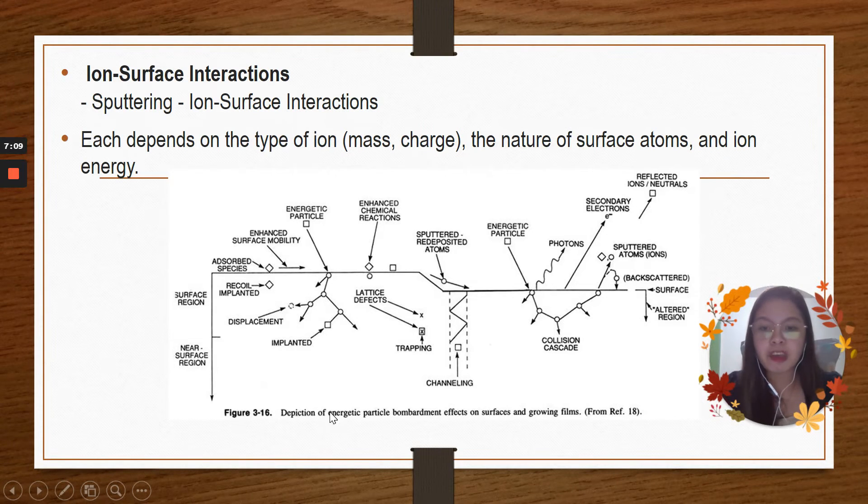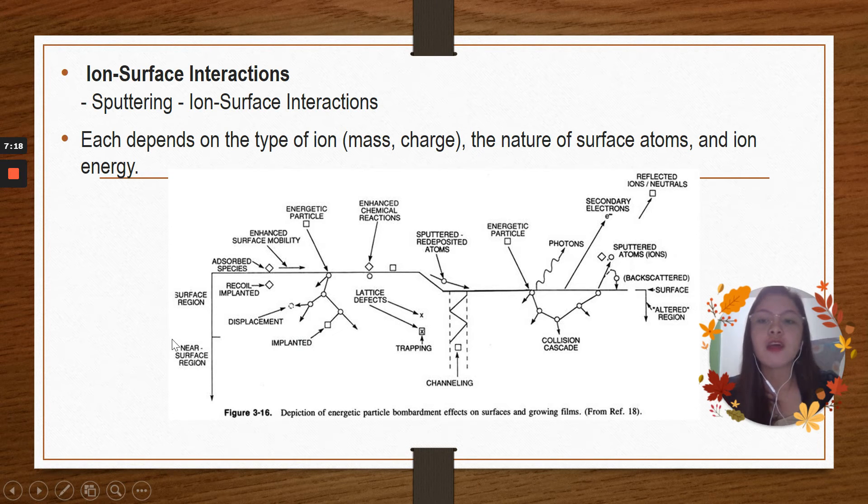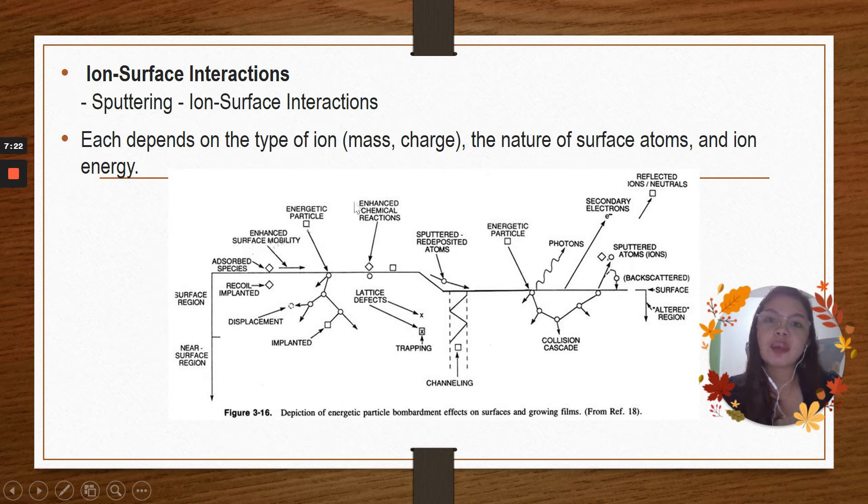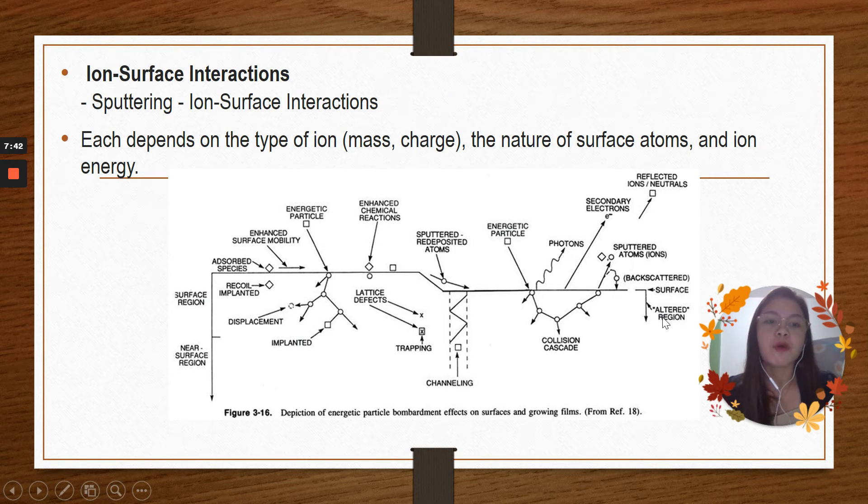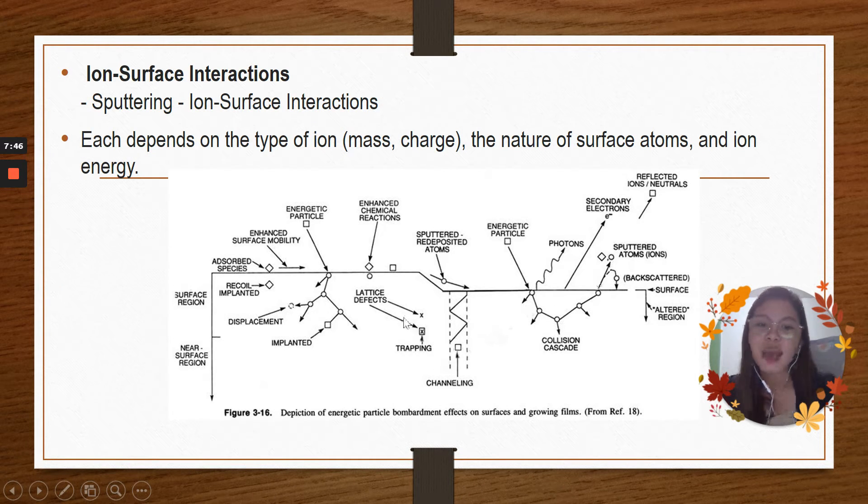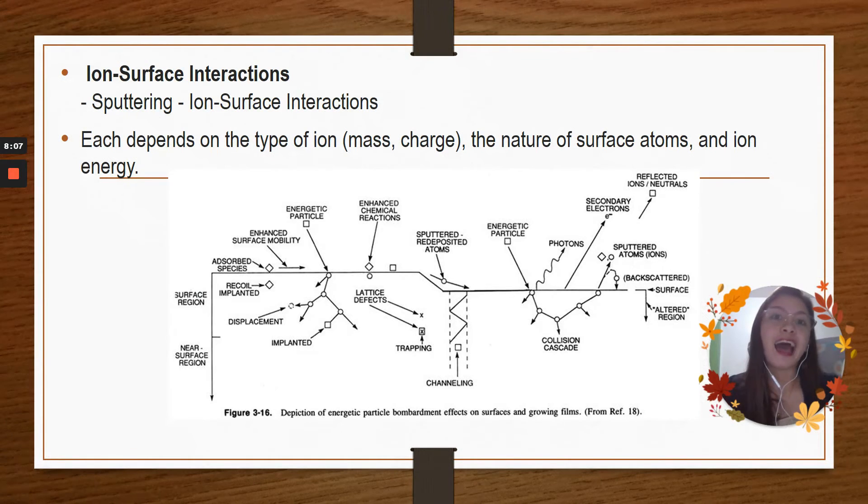This one is our depiction of energetic particle bombardment effects on surfaces and growing films. We have the near-surface region, surface region, absorbed species, energetic particle, enhanced chemical reactions, sputtered redeposited atoms, energetic particle. Again, we have the photons, secondary electrons, reflected ions, neutrals, sputtered atoms, ions, ducts scattered, the surface. We have the altered region, collision cascade, the channeling, the trapping, lattice defects, implanted displacement, and recoil implanted. And these stats here, or all these things, depends on the type of ion or mass charge, the nature of surface atoms, and ion energy.